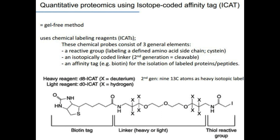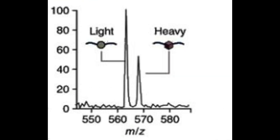In the ICAT workflow, we label one protein mixture with a light ICAT and the other with a heavy ICAT. We then proteolyze the entire protein mixture and enrich, or isolate, all the cut sequences that contain the ICAT tags, and run those under the mass spectrometry machine to see the peaks at the locations we want to observe.